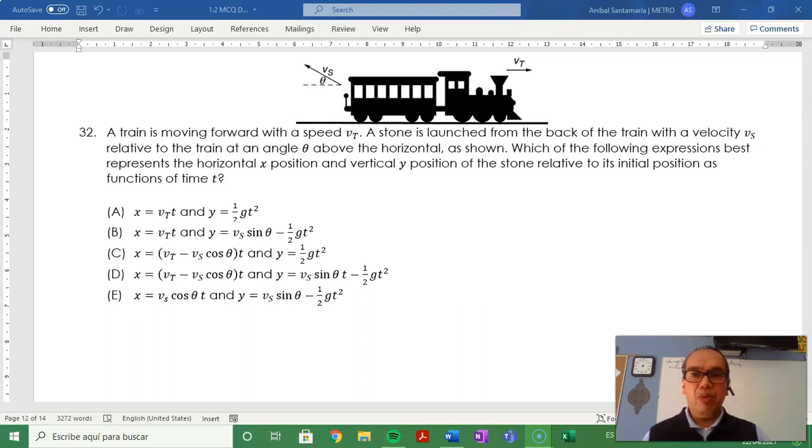Problem 32: A train is moving forward with a speed vT. A stone is launched from the back of the train with a velocity vs relative to the train at an angle theta above the horizontal as shown.